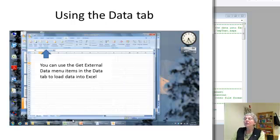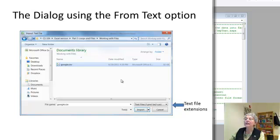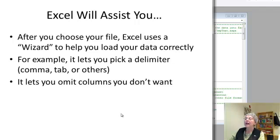So to do that, another way to do it is on the data tab in Excel, you can use the button to load data from other sources. And that will give you a dialog where you can navigate to your file and choose it. And then Excel will provide a wizard, as they call it, to help you upload your data correctly. So for example, it lets you pick whether your data is comma-delimited or tab-delimited, which is the other common format or anything else. And it also lets you omit any columns you don't want.